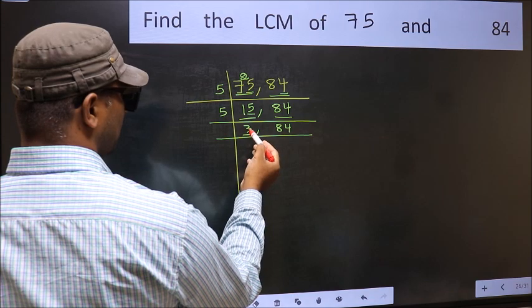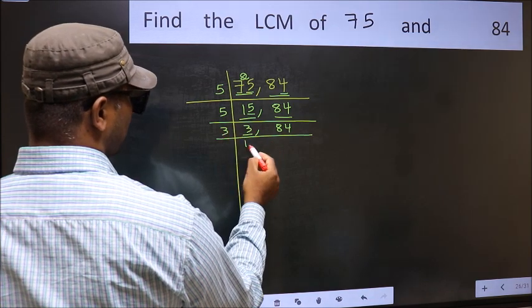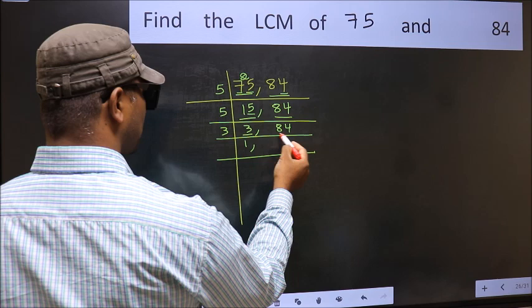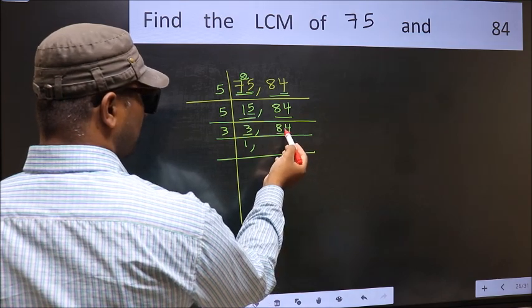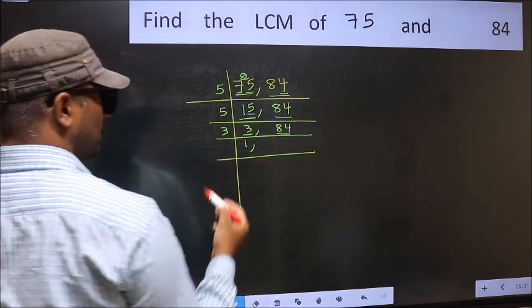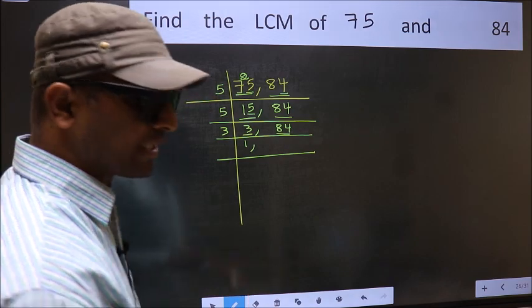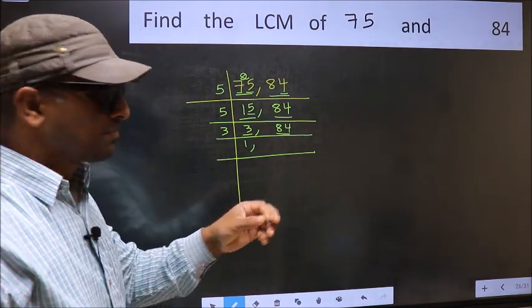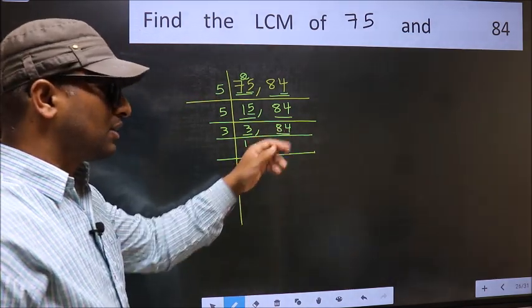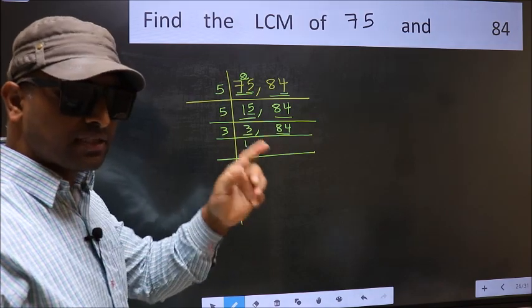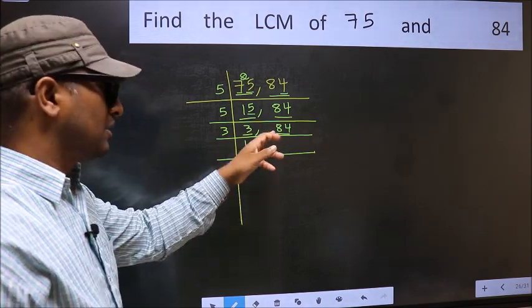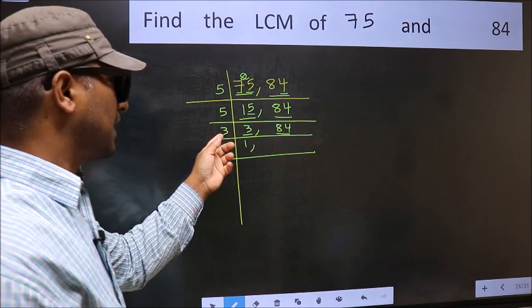Now here we have 3. 3 is a prime number, so 3 once 3. The other number 84 - to check whether it is divisible by 3 or not, add the digits. 8 plus 4, we get 12, and 12 is divisible by 3, so this number is also divisible by 3.